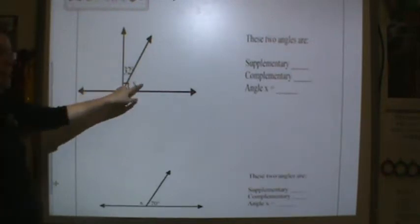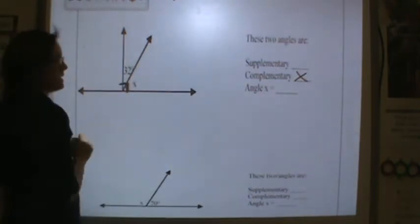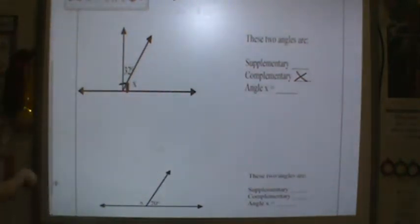These two angles, so they're asking you to find X, they are complementary because together they make 90 degrees. You are to find angle X for me tonight.